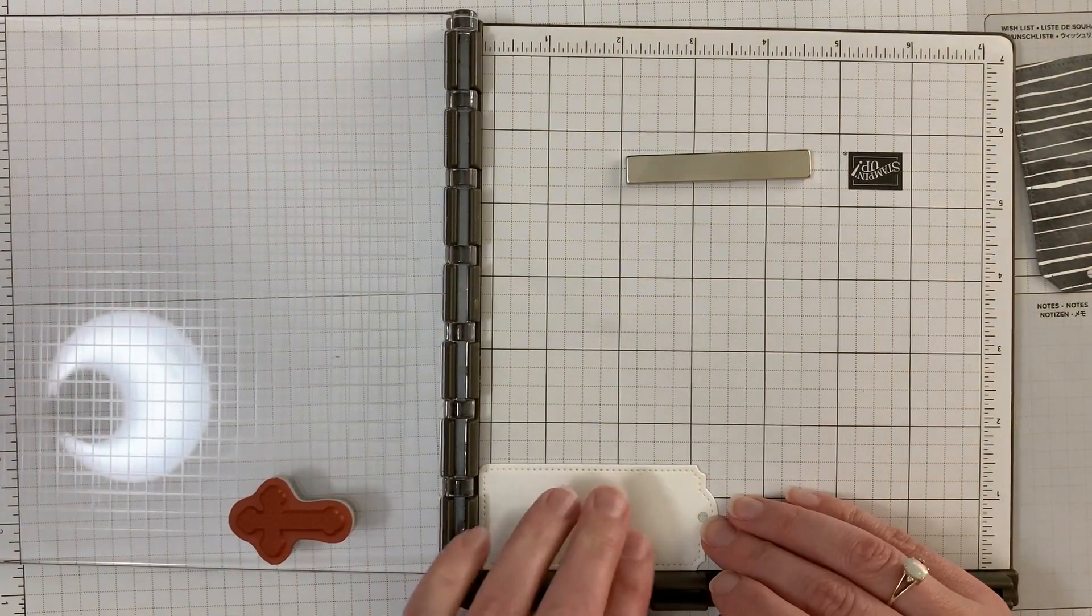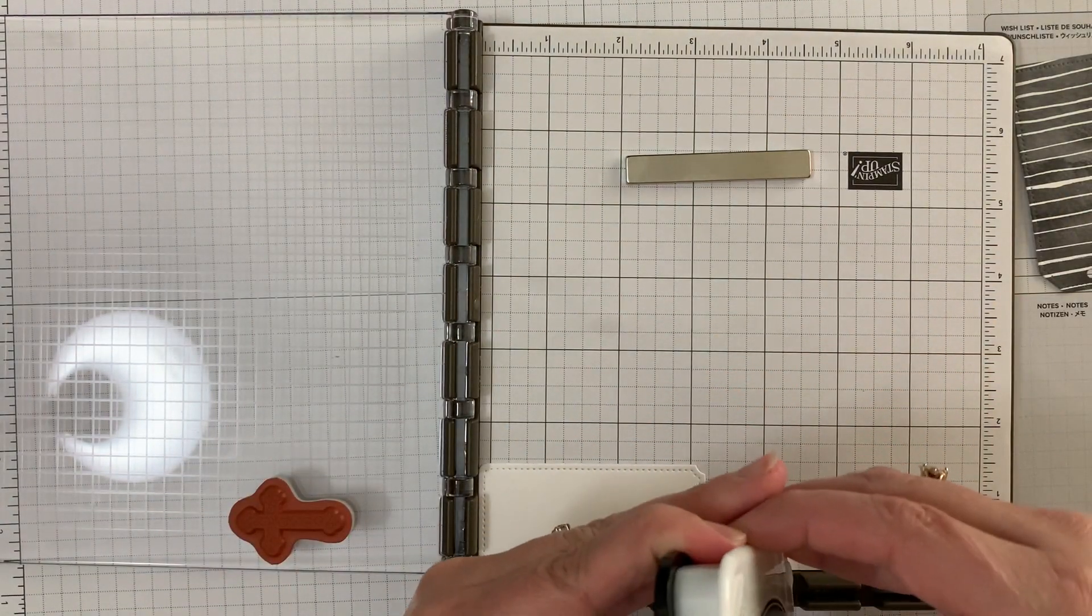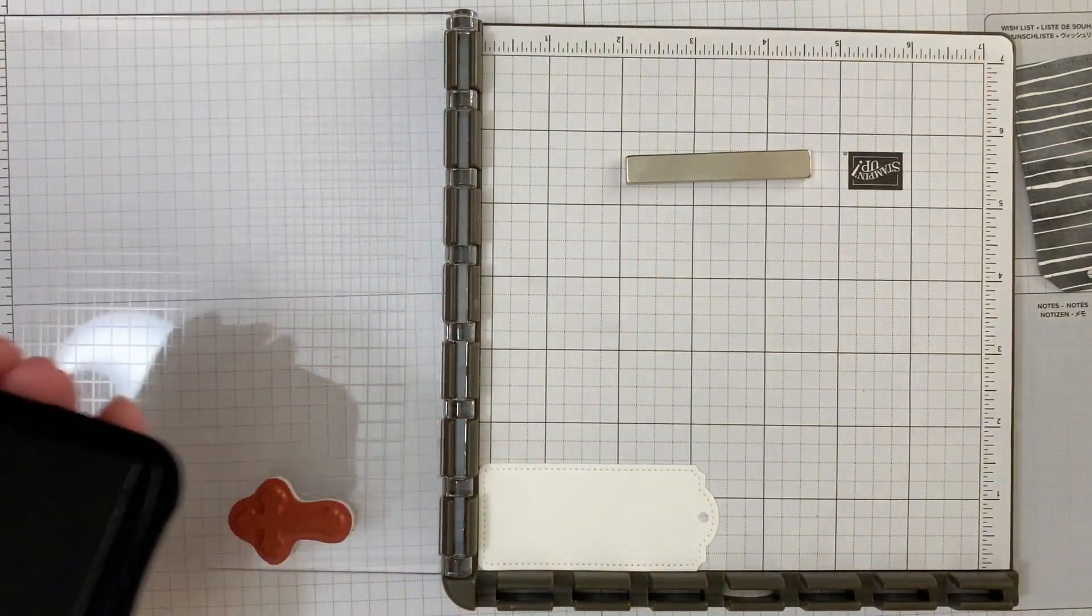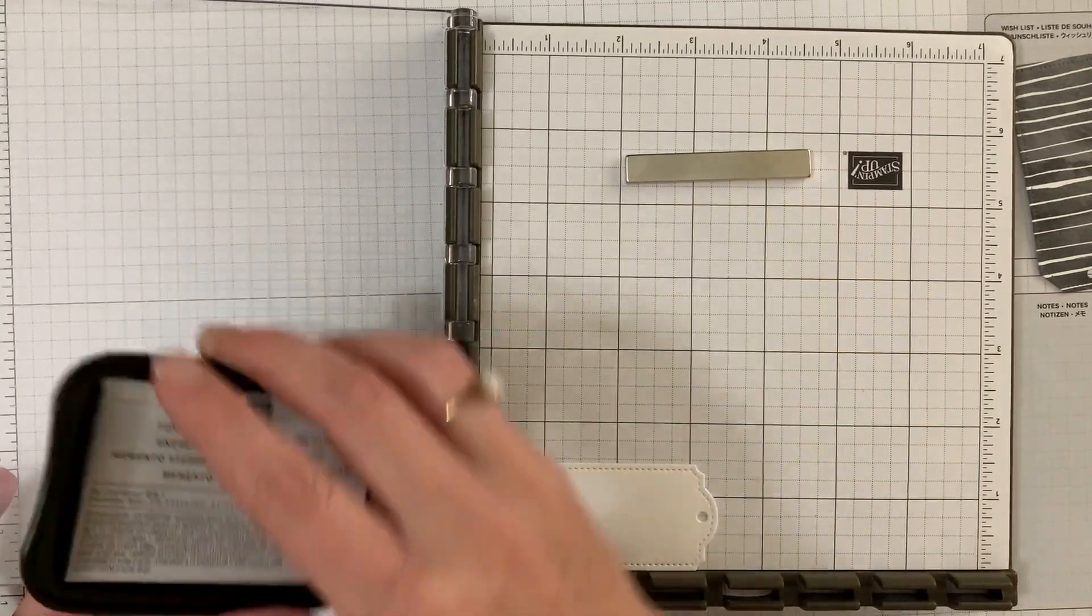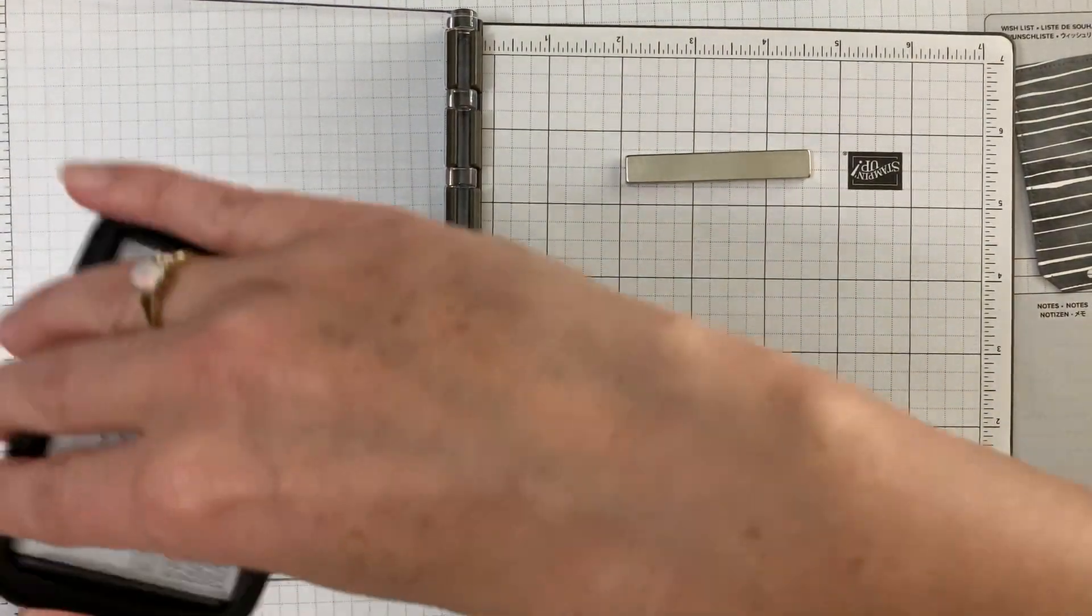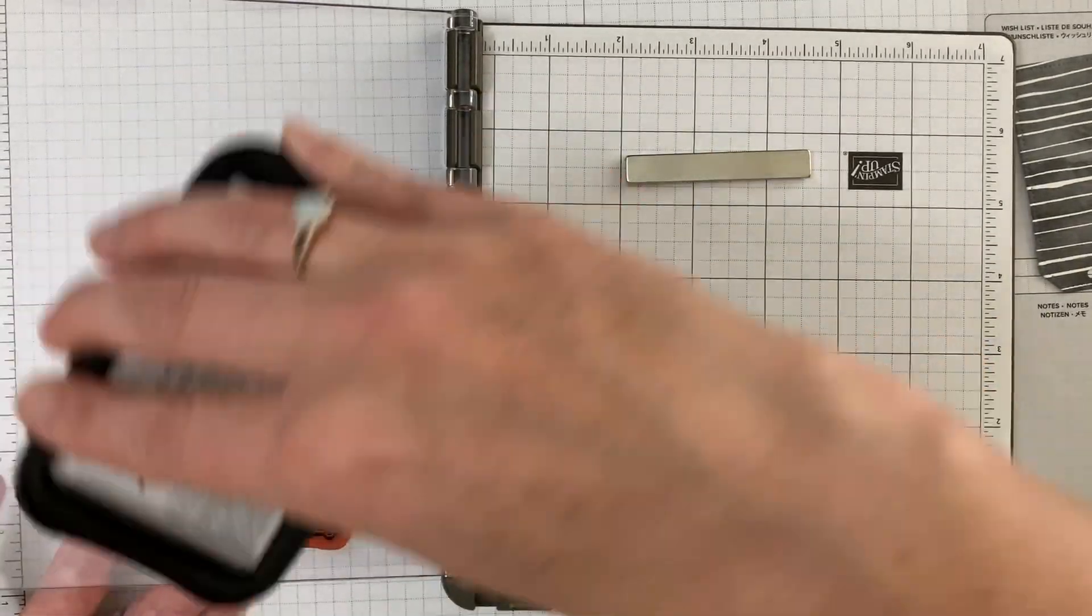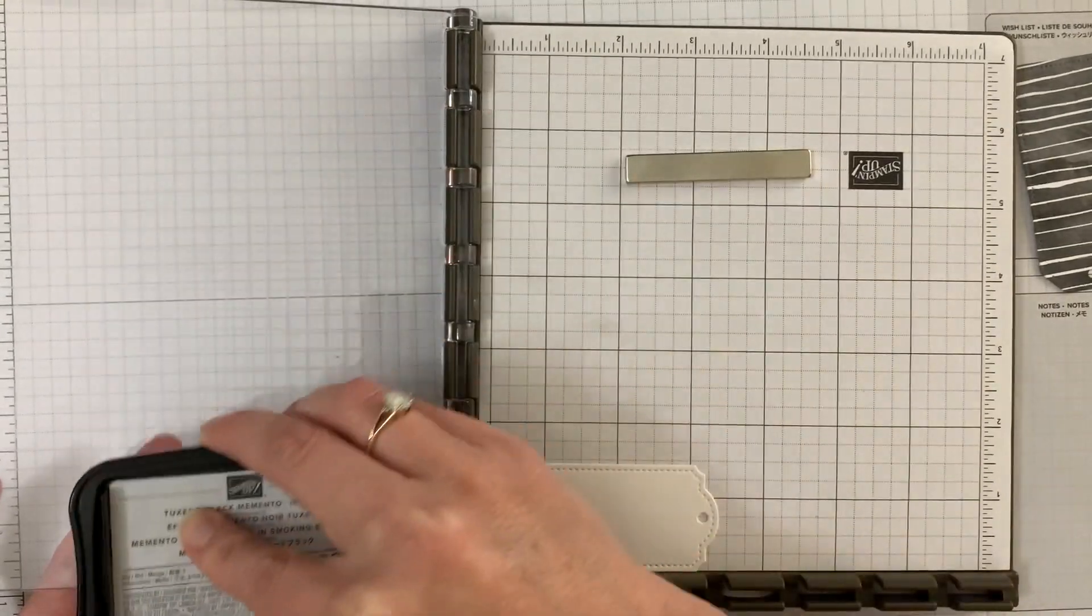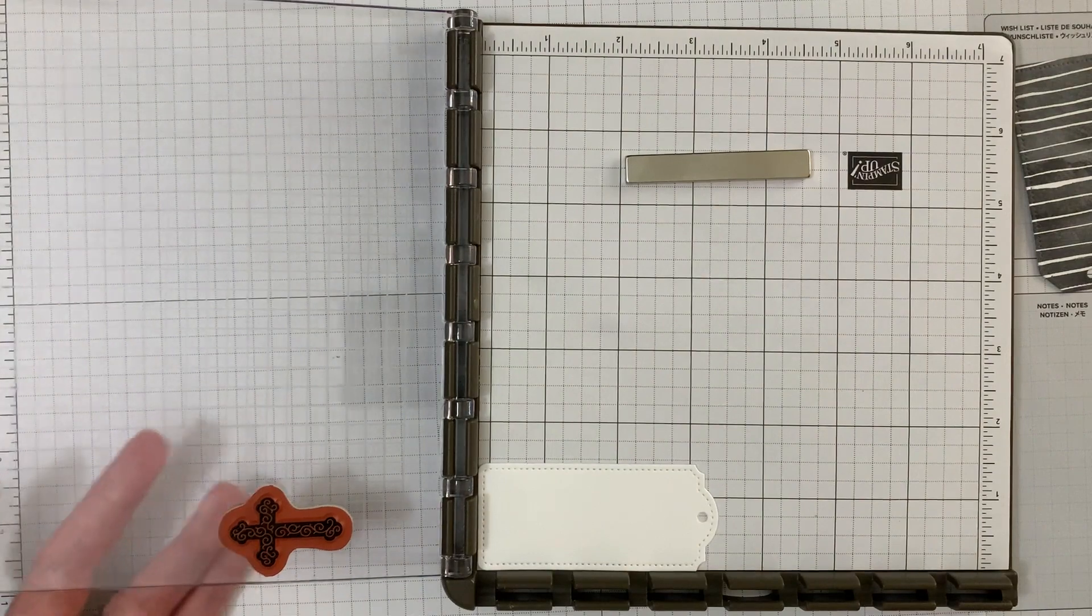All I did was add the ribbon and wrote our little verse on there that we wanted. So let me show you, I mounted that already. We probably did, I would say, one a minute and we were busy for half an hour, I think, and we got 30 of these little bookmarks slash gift tags made.